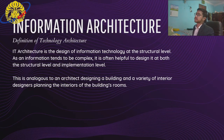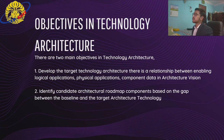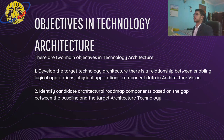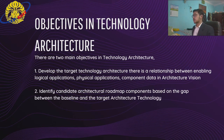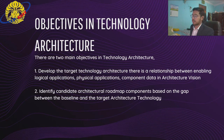The objectives in technology architecture: there are two main objectives. First, develop the target technology architecture — there is a relationship between enabling logical application, physical application, and company data in architecture efficiently. The second is to identify candidate architectural roadmap components based on the gap between the baseline and the target architecture.